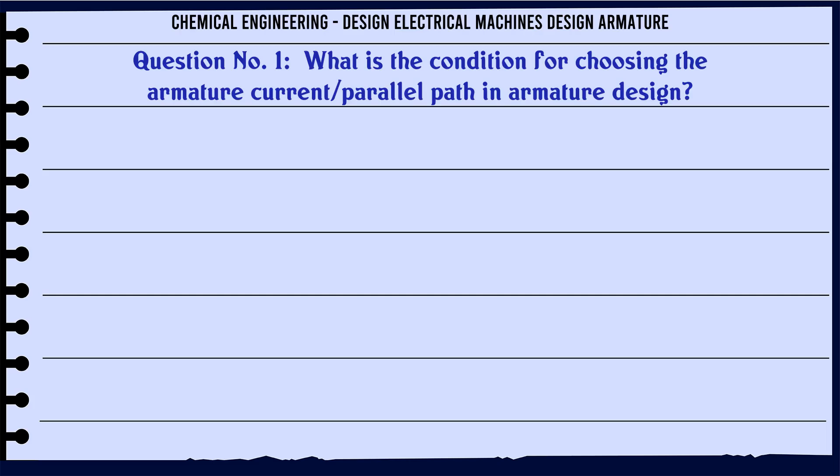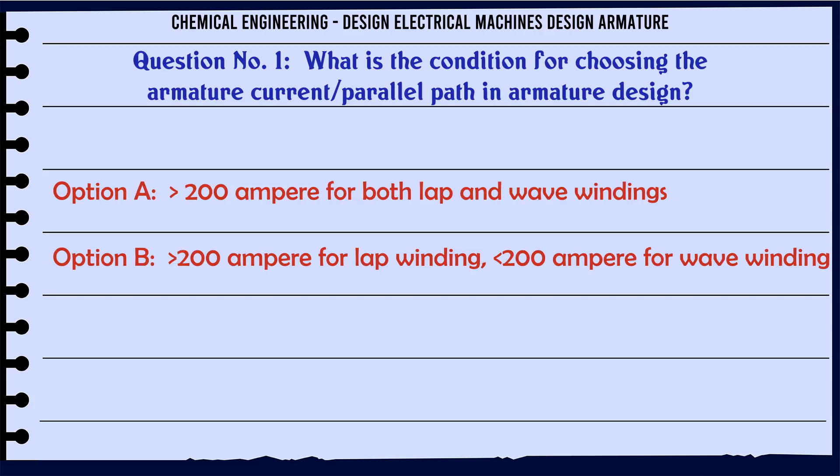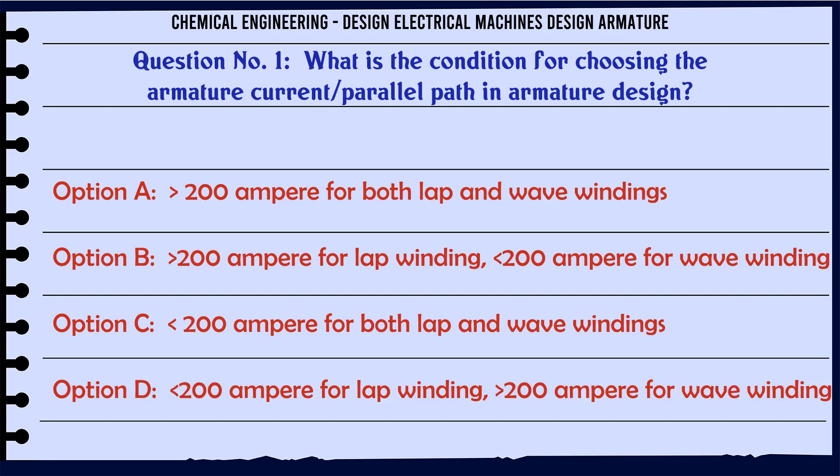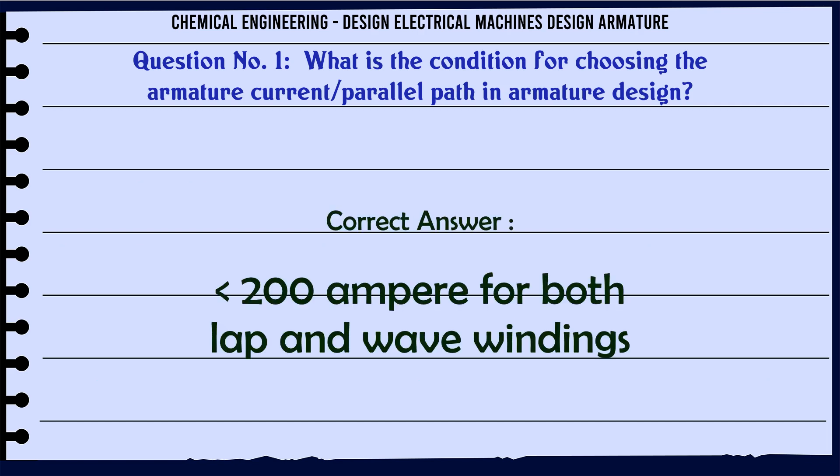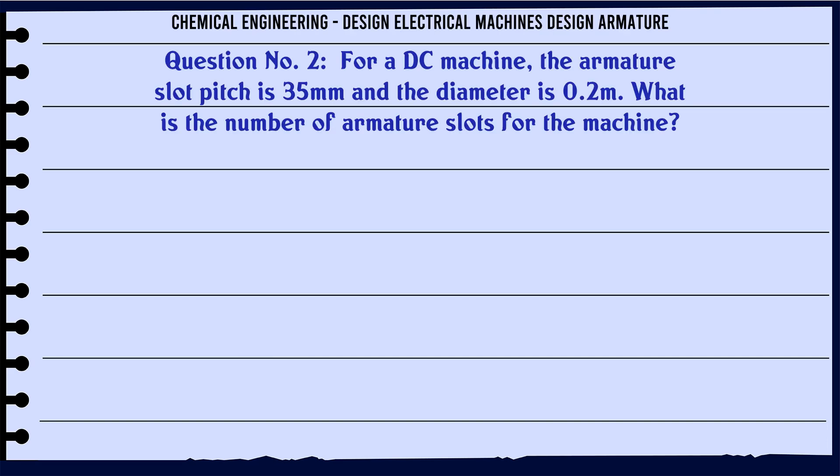What is the condition for choosing the armature current parallel path in armature design? Options: a) 200 Ampere for both lap and wave windings, b) 200 Ampere for lap winding and 200 Ampere for wave winding. The correct answer is 200 Ampere for both lap and wave windings.